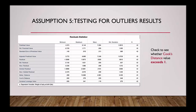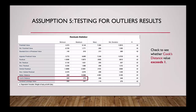Finally, we want to check for any outliers. For this, you use the Residual Statistics table and look for the Cook's distance value. The Cook's distance value should not exceed 1. This is the case in our results, where the minimum value is 0 and the maximum value is 0.278. If there are outliers in the data, you may want to remove them or transform them, but you must have a good reason for doing so.